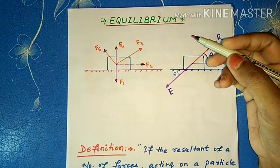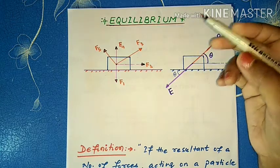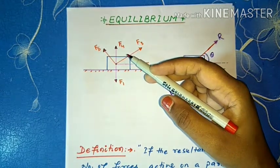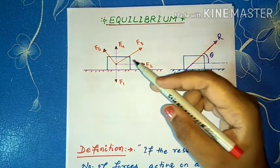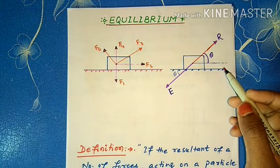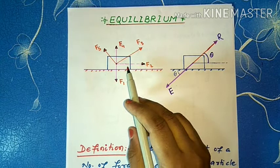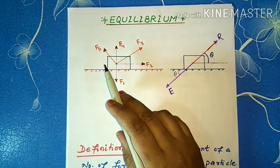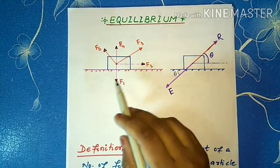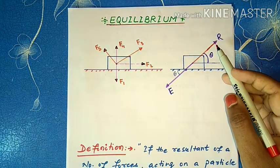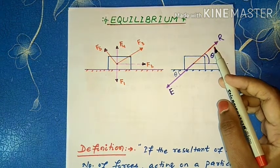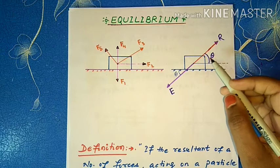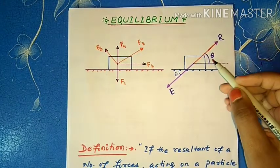Previous session में हमने resultant force का पता लगाने के विभिन्न तरीकों पर चर्चा की है। जब एक particle या body पर कई forces एक साथ act करते हैं तो इस resultant द्वारा produced effect सभी दिये गए forces द्वारा produced effect के समान होगा। For example, let us consider a number of forces acting on a body — five forces F1, F2, F3, F4 and F5 acting on a block. We have replaced all the five forces acting on a body by a single force called resultant, जिसे resultant कहते हैं, where theta shows the direction of the resultant force.